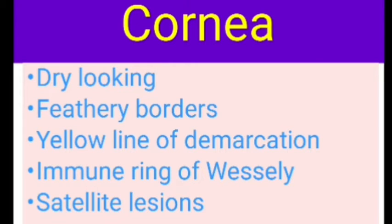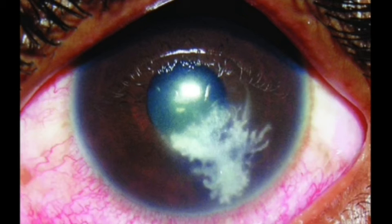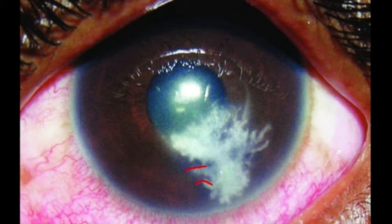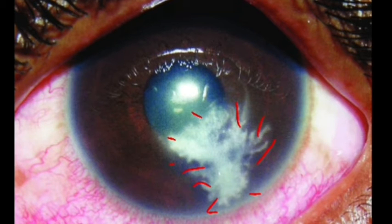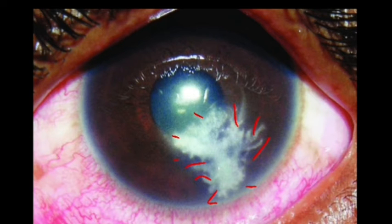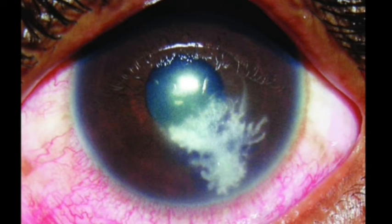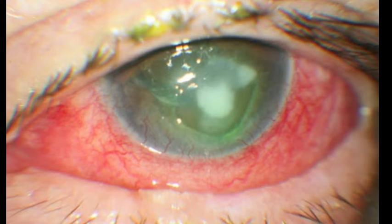On examining the corneal ulcer, you will see specific features: it is a dry-looking ulcer with organized exudates, it has feathery borders, there is a yellow line of demarcation, and there is the immune ring of Westlay with satellite lesions. The immune ring of Westlay forms around the ulcer due to a type 3 immunological reaction — the antigen-antibody reaction in the corneal stroma. There will also be multiple satellite lesions around the corneal ulcer.